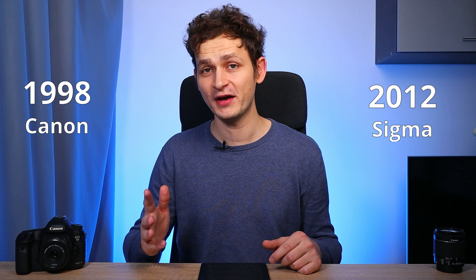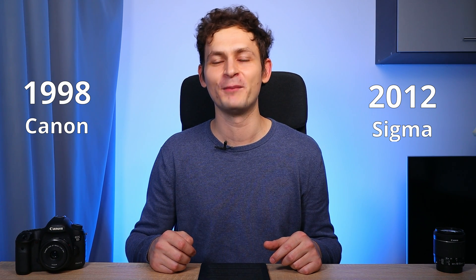Does that year difference matter? 1998 when the Canon was released versus 2012 when the Sigma hit the market? We will find out. There will be four rounds: sharpness in the middle of the image, sharpness in the corners, in close ups and diffraction. Let's see which lens is better.